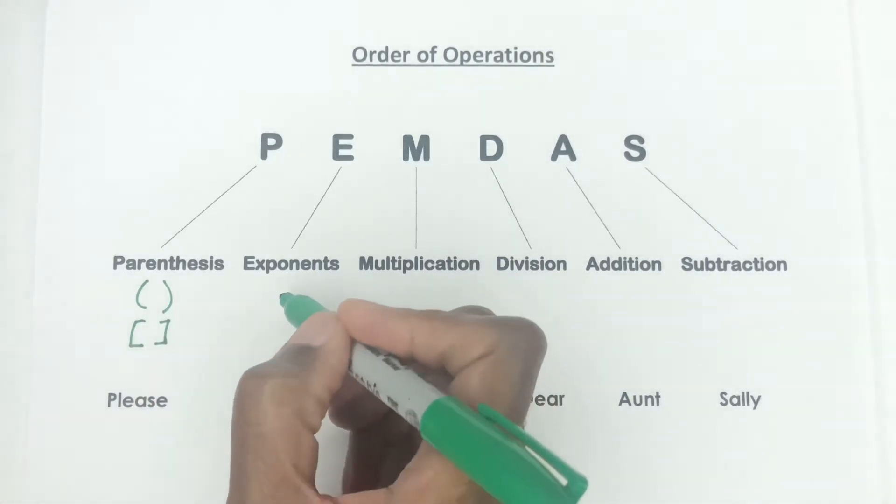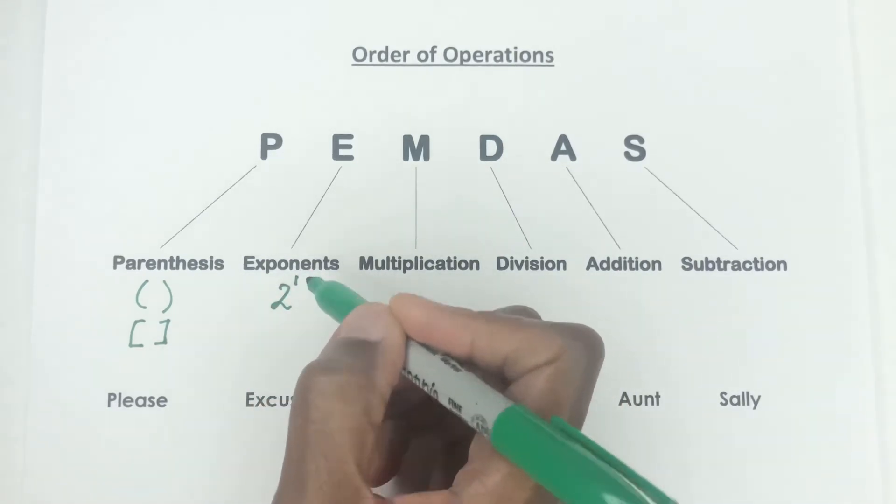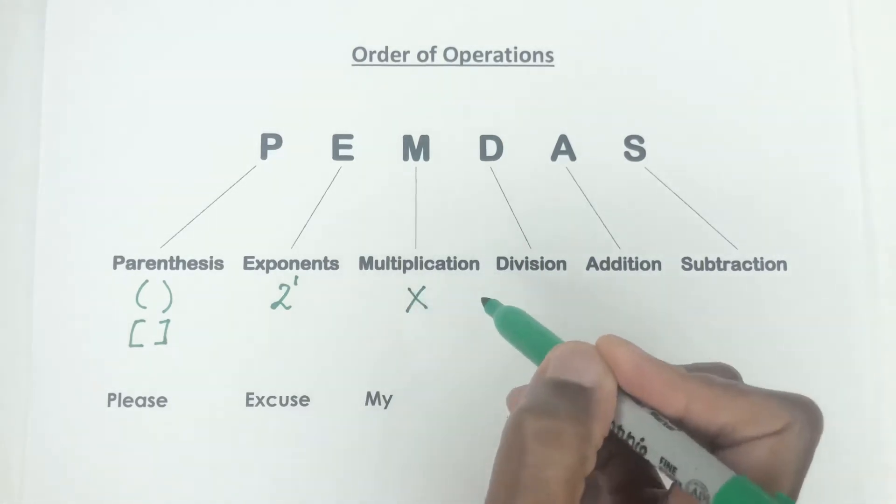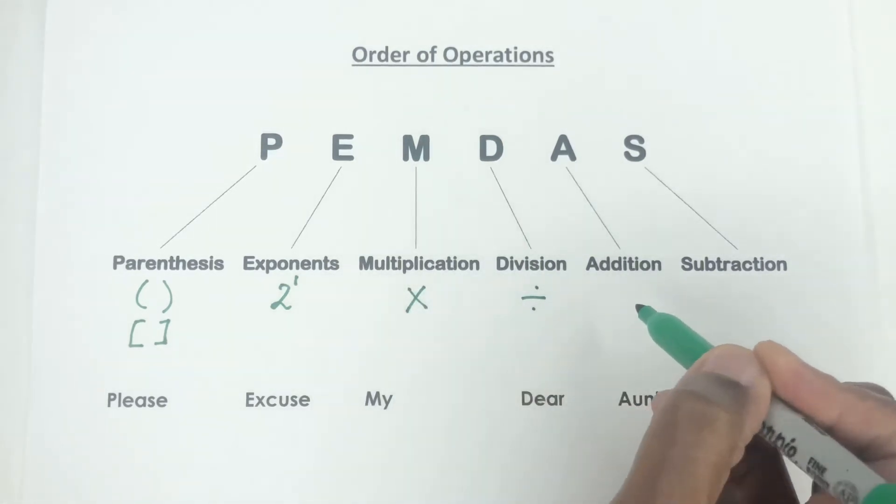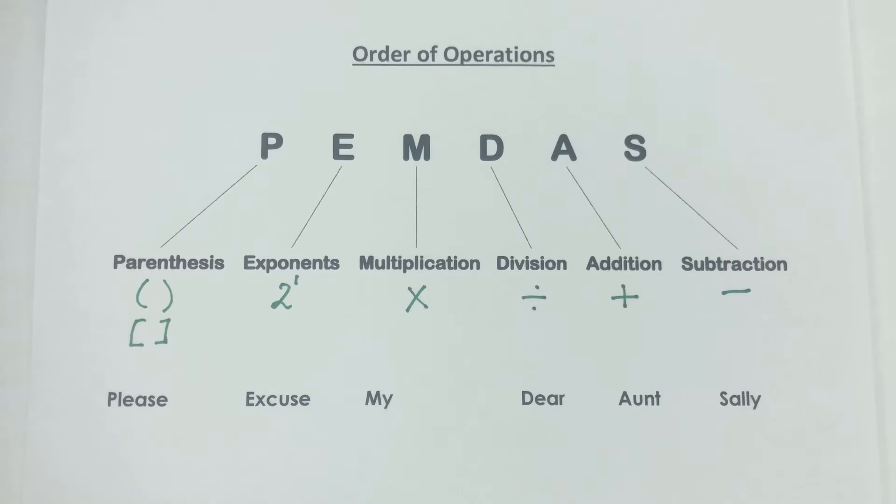And then you have exponents—exponents is like you have a little one or a two or three at the top, whatever number at the top. Here is an exponent. And then you have the common operations which are the multiplication, the division, the addition, and then the subtraction.